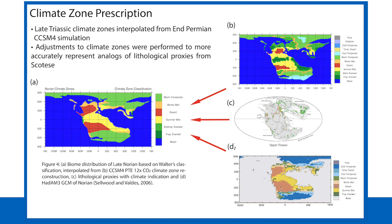Late Triassic climate zones were prescribed through the interpolation of the CCSM4 simulation of the end Permian. Adjustments to the climate zones were performed based on lithological proxies as described in the Paleomap Project by Dr. Scotese, as well as a late Triassic climate simulation using the HadAM3 general circulation model for the late Norian, completed by Sellwood and Valdez. As seen in figure 4a, the late Triassic was a time of little climatic variability, with widespread aridity especially in the mid-latitudes.